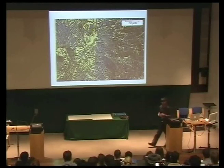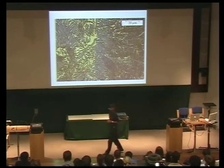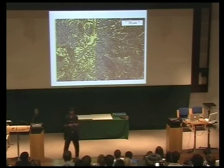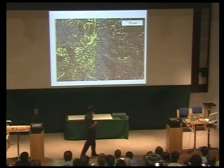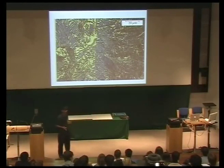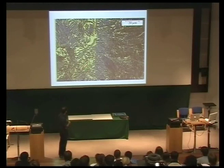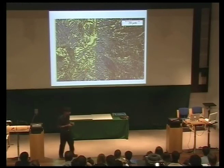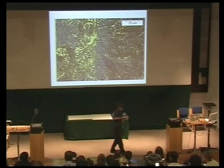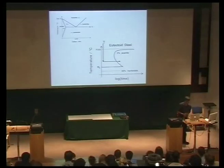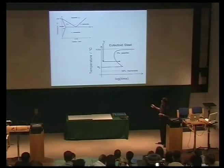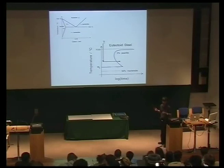Can somebody tell me what this microstructure is? It's in a eutectoid steel. Pearlite. You have been told in the past that pearlite consists of layers of ferrite and cementite. And you can see in this two-dimensional section that we have these layers of ferrite and cementite. A eutectoid composition is exactly like this — about 0.8 weight percent carbon.